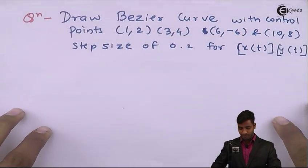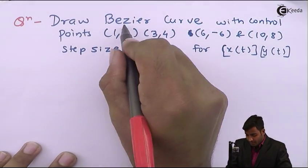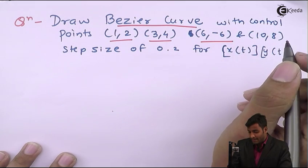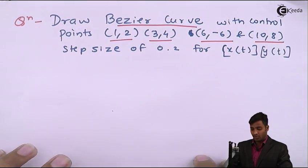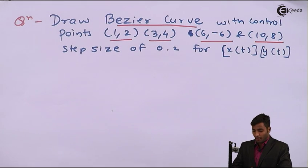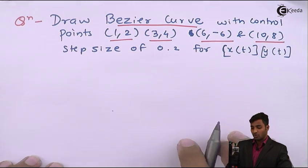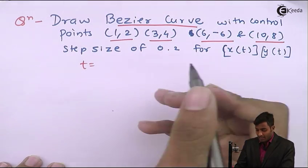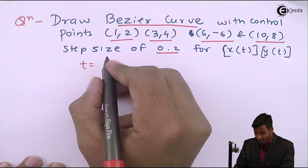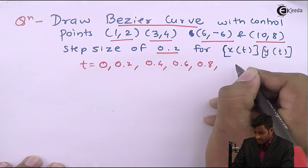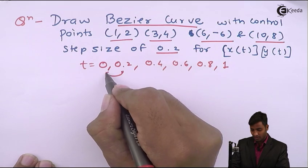Hello friends, in this video we will solve a problem related to Bezier curve. Here is the problem: draw a Bezier curve with control points (1,2), (3,4), (6,-6), and (10,8). The 4 control points have been given, and the step size of t is 0.2, which means we have to find values at t = 0.2, 0.4, 0.6, 0.8, and 1.